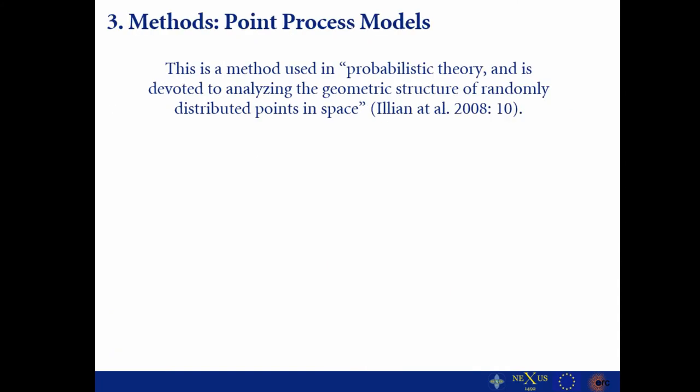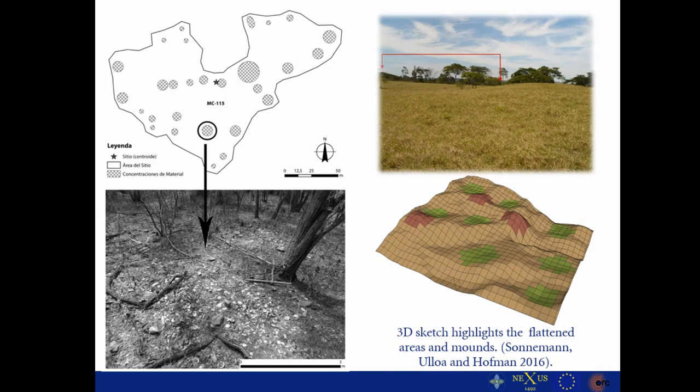The second method is a point process model. As you probably know, a point process model is a method in probabilistic theory devoted to analyzing the geometric structure of randomly distributed points in space. We use point process models particularly to analyze a very important feature in Caribbean archaeology: anthropogenic mounds.